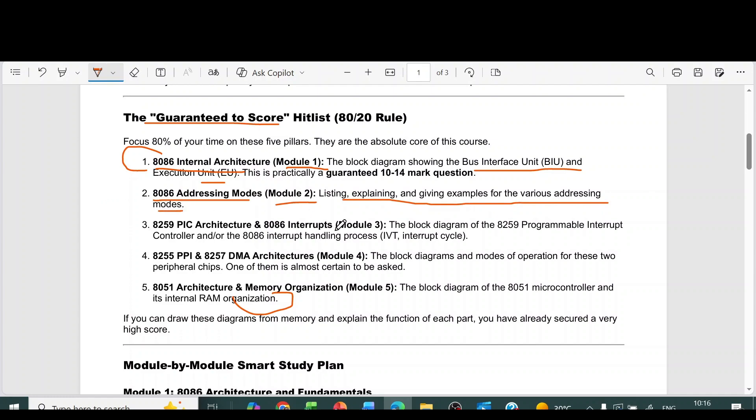Then from the third module, it is 8259 PIC architecture and 8086 interrupts, the block diagram of the 8259 programmable interrupt controller and the 8086 interrupt handling process. Then from module 4, 8255 PPI and 8257 DMA architectures, the block diagrams and modes of operation for these two peripheral chips.